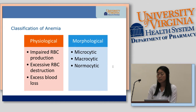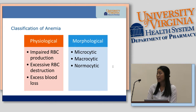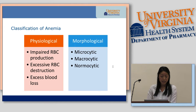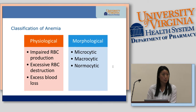The classification of anemia can also be described in physiological as well as morphological terms. Physiologically, you can have impaired red blood cell production, excessive red blood cell destruction, and excessive blood loss. Morphologically, it's described as microcytic, macrocytic, or normocytic.